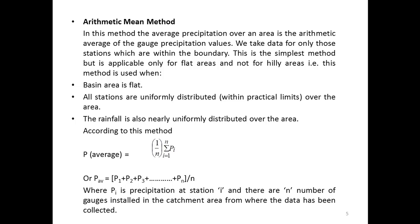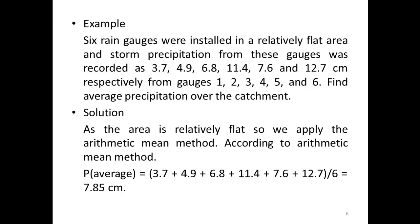Example of the Arithmetic Mean Method: Six rain gauges were installed in a relatively flat area and storm precipitation from these gauges were recorded as 3.7, 4.9, 6.7, 7.4, 7.6, and 12.7 centimeters respectively from gauges 1 through 6. We have to find the average precipitation over the catchment area. Since the area is relatively flat, we apply the Arithmetic Mean Method.